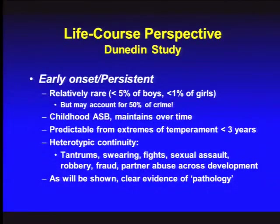A famous study by Moffitt — who is married to Caspi — was conducted in Dunedin, New Zealand. About 42 or 43 years ago, every child born in that town was automatically enrolled in a study. It wasn't a sample — it was every kid born that year in the town. They just finished their 40th year follow-up with 97% participation. When the kids were teens, they collected blood and figured out their DNA. Moffitt has followed participants starting at age 3, conducting full-day assessments every two years.